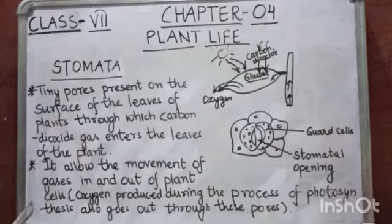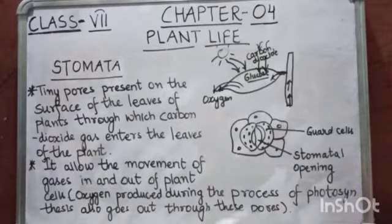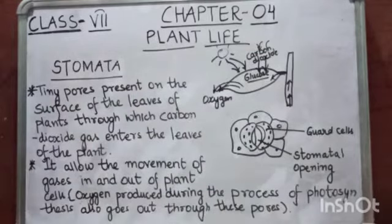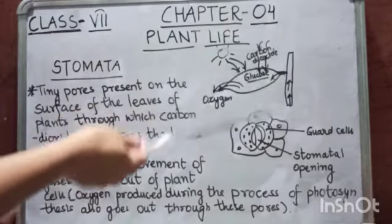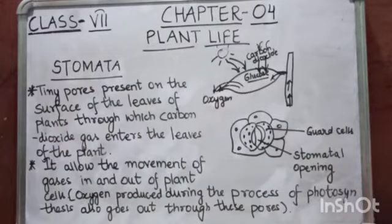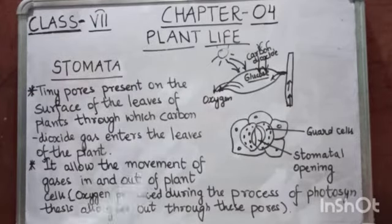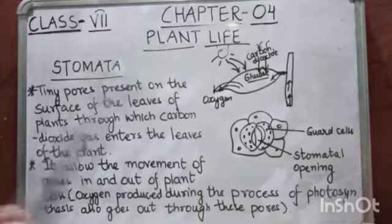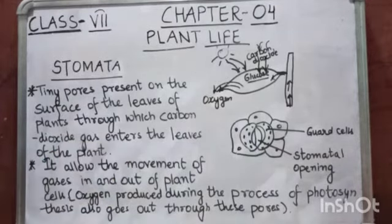Stomata also allow the movement of gases in and out of plant cells. Carbon dioxide enters the leaves, and oxygen gas which is produced during the process of photosynthesis is also released out into the air through these tiny pores.